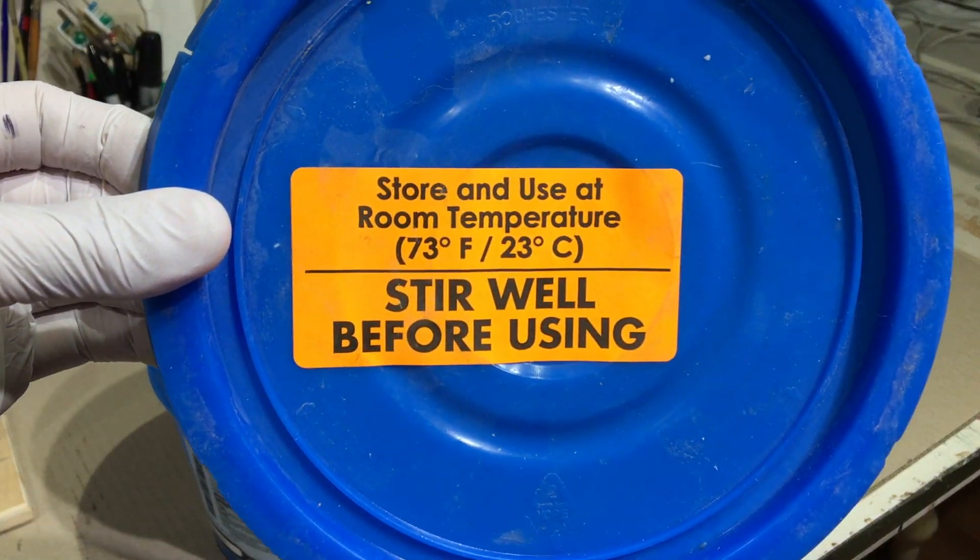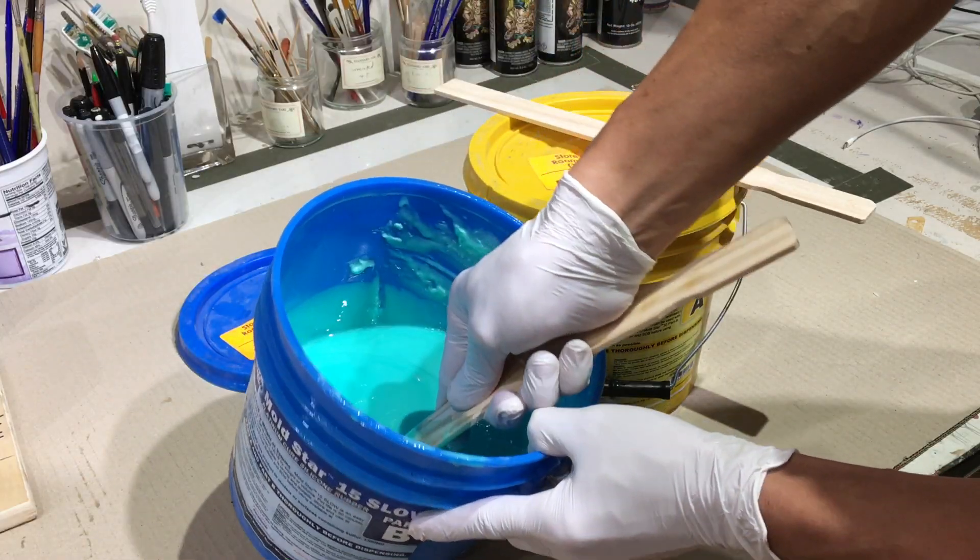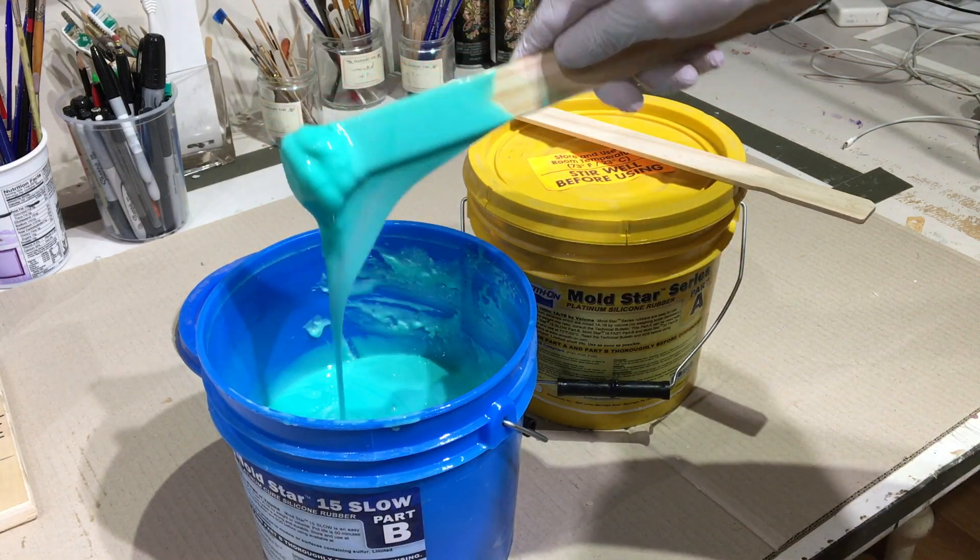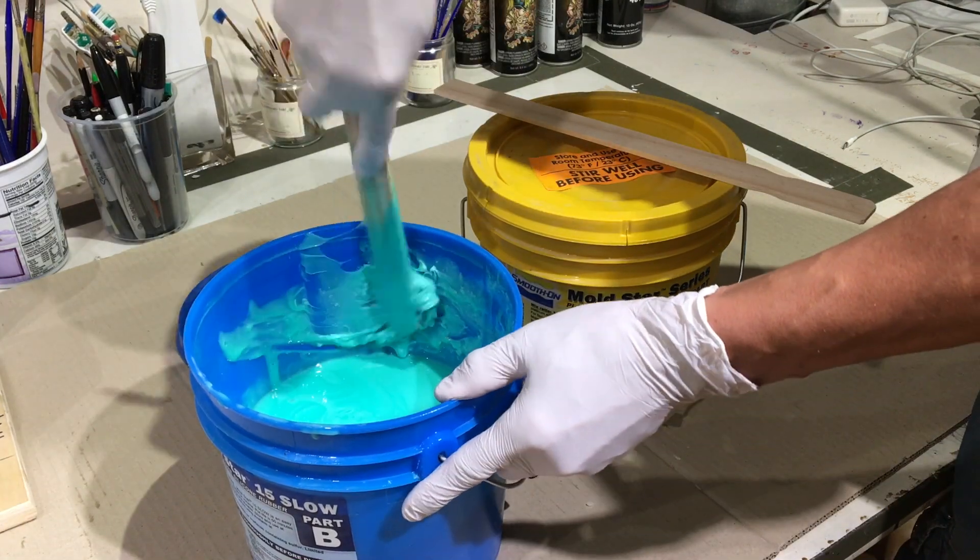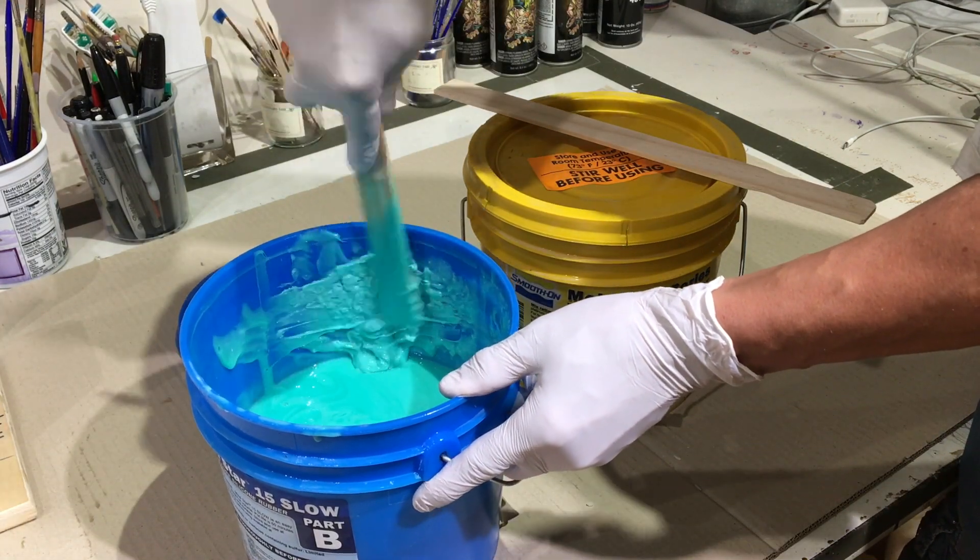Make sure you stir well before using. What happens is this stuff will settle the longer it sits. So sometimes you can end up with this kind of thick peanut butter like texture at the bottom of the bucket that you need to scrape up and then mix in with everything else.